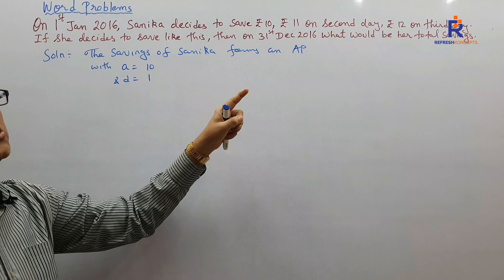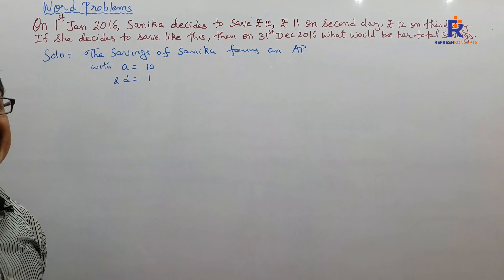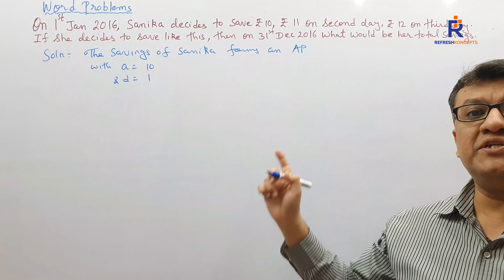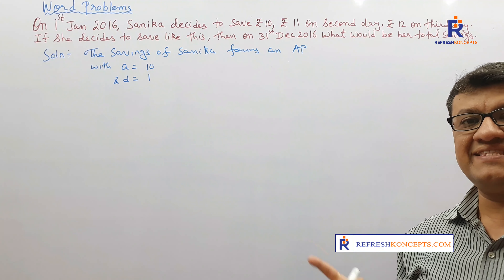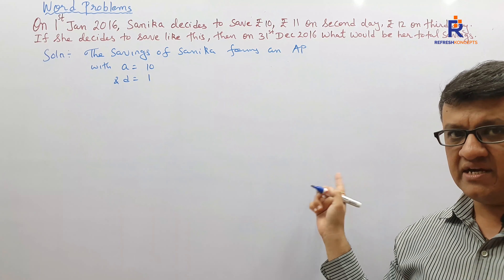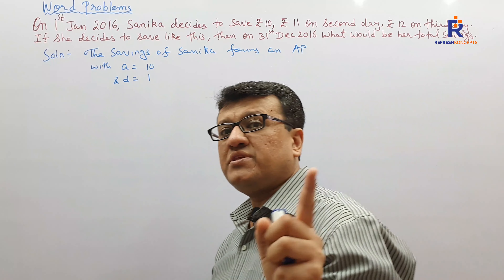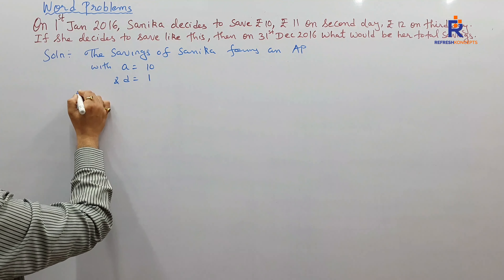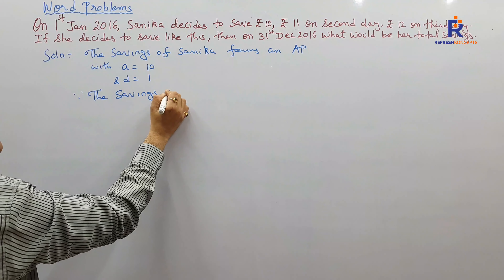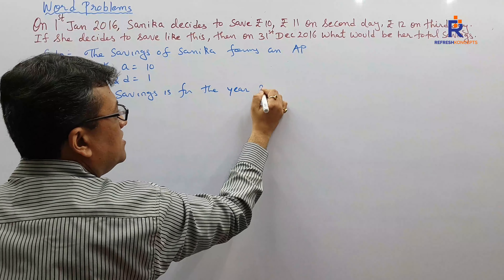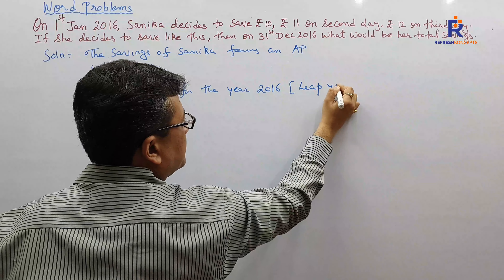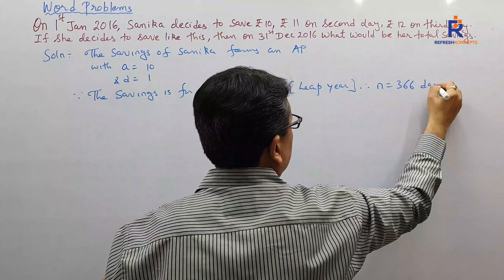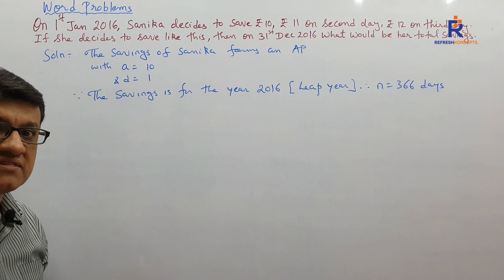Now for which year is she saving? She is saving for the year 2016, from 1st January to 31st December. 2016 should be kept in mind — it is a leap year, though not mentioned in the question. This is what you as a student should take care of. People tend to take 365 days, but it is not 365 — it is 366. Since the savings are for the entire year 2016, it's a leap year, so there are 366 days. Therefore N = 366.